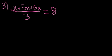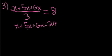So what we need to do is solve for x. So let's remove the 3 by multiplying 3 to each side. So we get x plus 5x plus 6x equals 24. We simplify the left side and we get 12x equals 24.